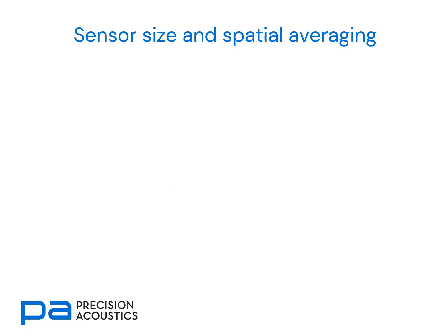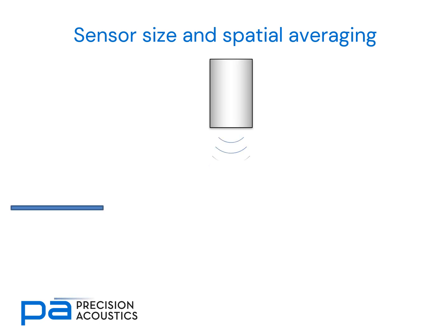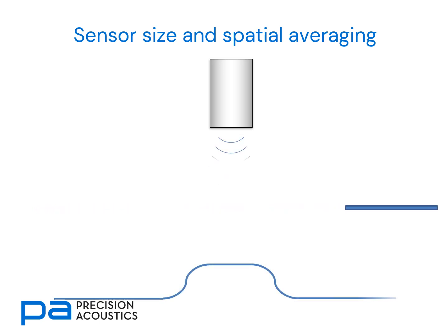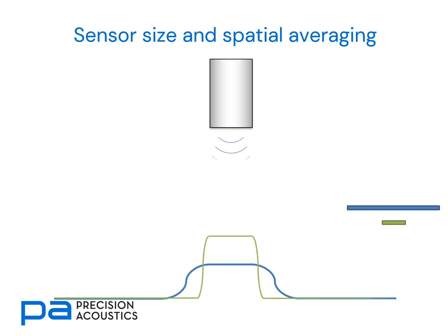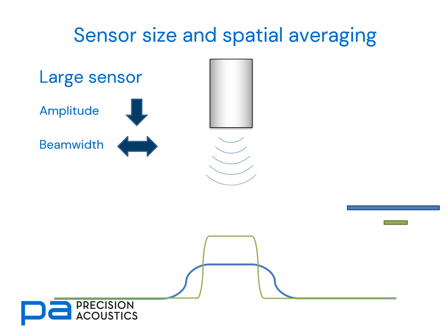Now let's consider the impact of sensor size and spatial averaging. Consider a source of ultrasound radiating forward. If we scan in front of that radiating source, we get a measured profile for the apparent beam width. If we undertake the same measurement with a very much smaller sensor, we find a very different profile. By using a sensor that's too large, we find reduced amplitude and an increased beam width relative to a very much smaller sensor.